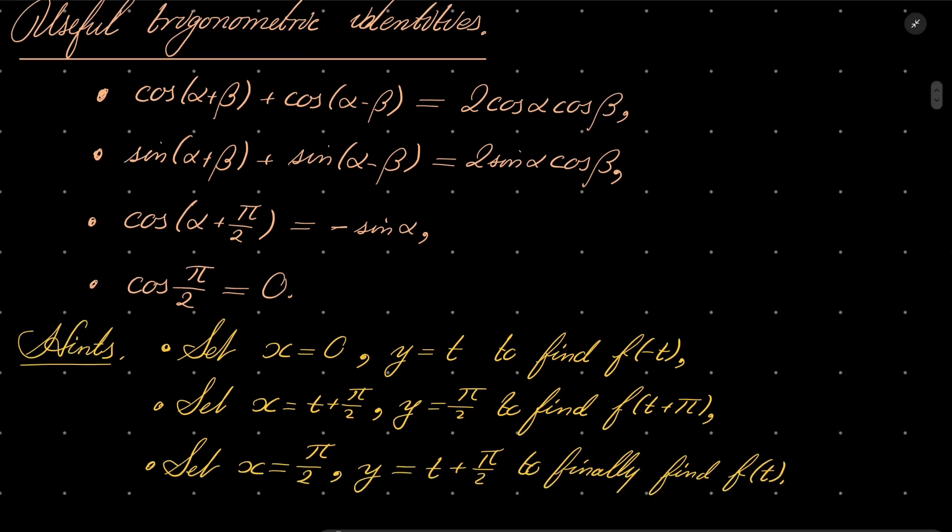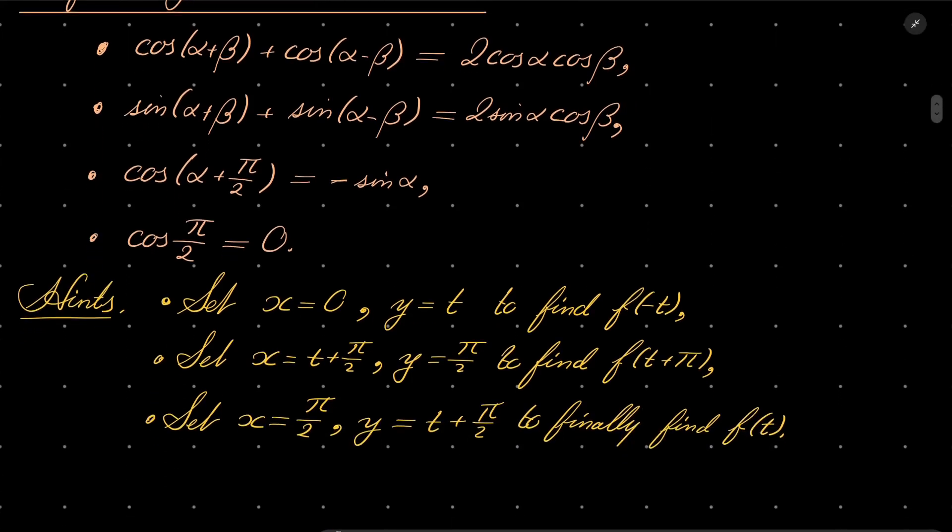And the actual hints for this problem: first try setting x to be 0 and y to be t, where t is some real number, to find f(-t). Then set x to be t + π/2 and y to be π/2 to find f(t+π). And finally set x to be π/2 to find f(t). Also remember to do verification in the end. So give this problem a try.